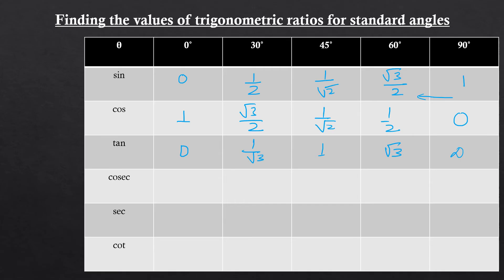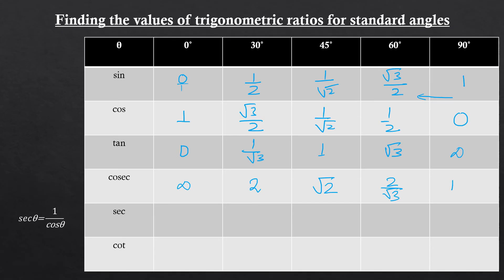For cosec θ, we know cosec θ = 1/sin θ, so we take the reciprocal of the sine values. Cosec 0° is undefined (1/0); cosec 30° = 2; cosec 45° = √2; cosec 60° = 2/√3; and cosec 90° = 1.